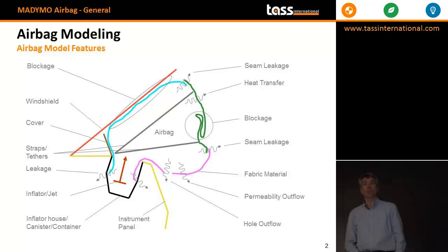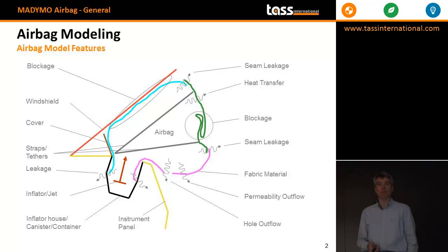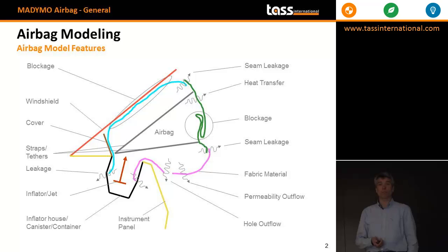First, let's describe the general overview of an airbag. You see here a picture of a passenger airbag. I will describe each keyword starting from the left column, top down, and then I will go to the right. Those are the keywords which are relevant with respect to airbag modeling. The red line is the windshield, in yellow the IP — the instrument panel — and in black is the inflator housing. This is where the airbag is folded in.